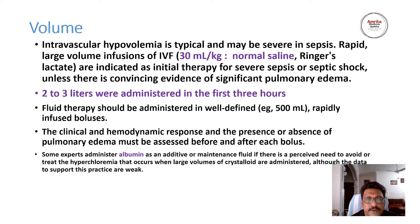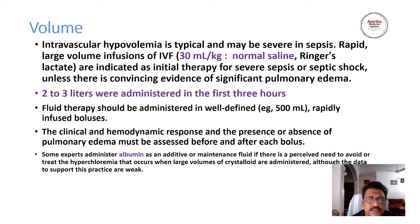Volume resuscitation is one of the most important things in sepsis. The patient is losing fluid from the intravascular compartment due to vascular leak. Immediately put two large bore IV cannulas and start 30 ml per kg normal saline. Normal saline or Ringer's lactate is the best fluid. There is no major contraindication for Ringer's lactate in lactic acidosis, but if the patient has severe liver damage and develops lactic acidosis, try to avoid Ringer's lactate.